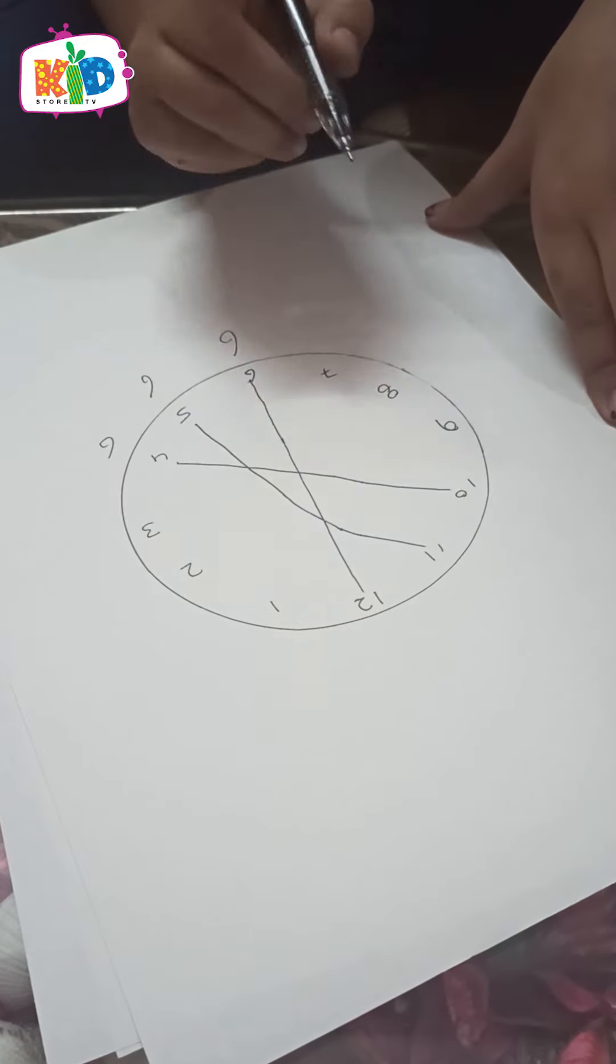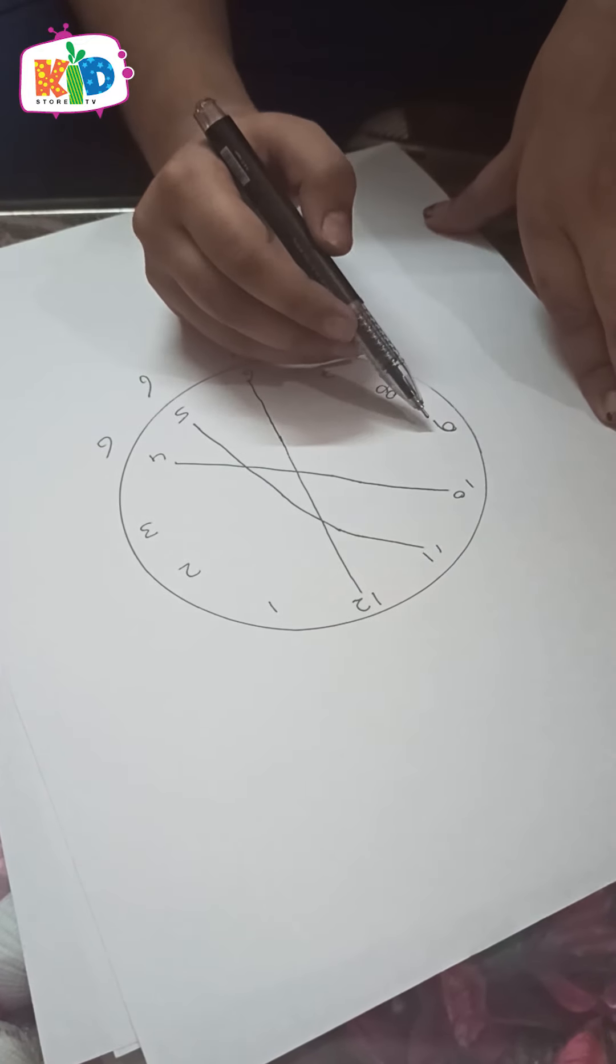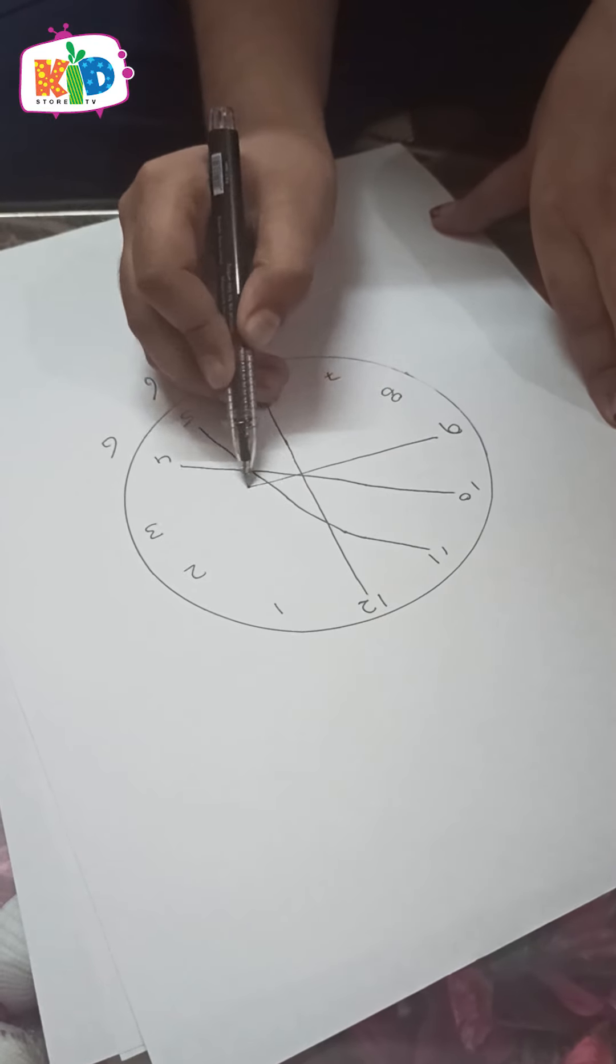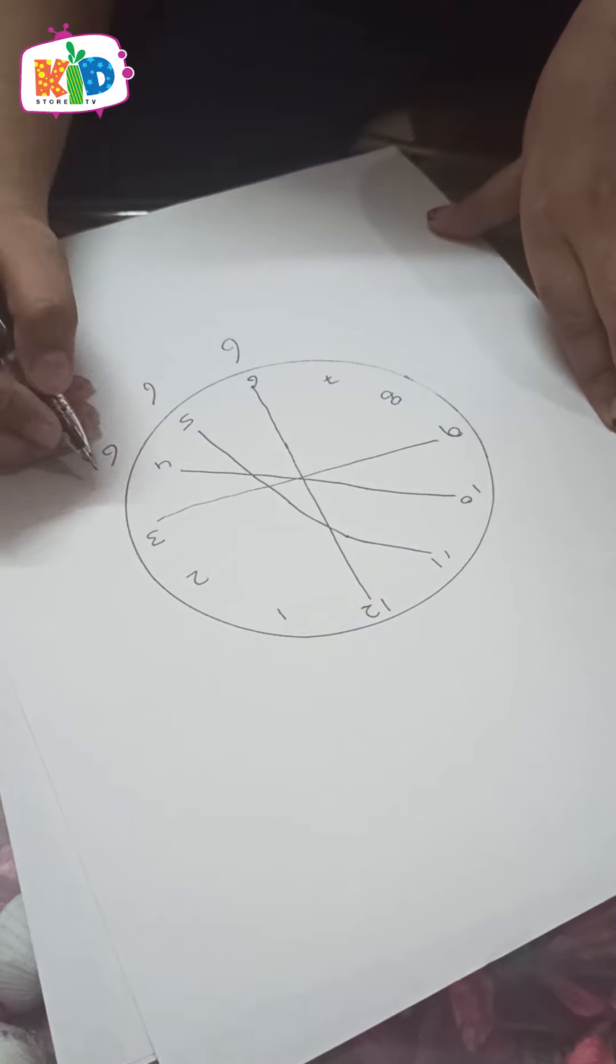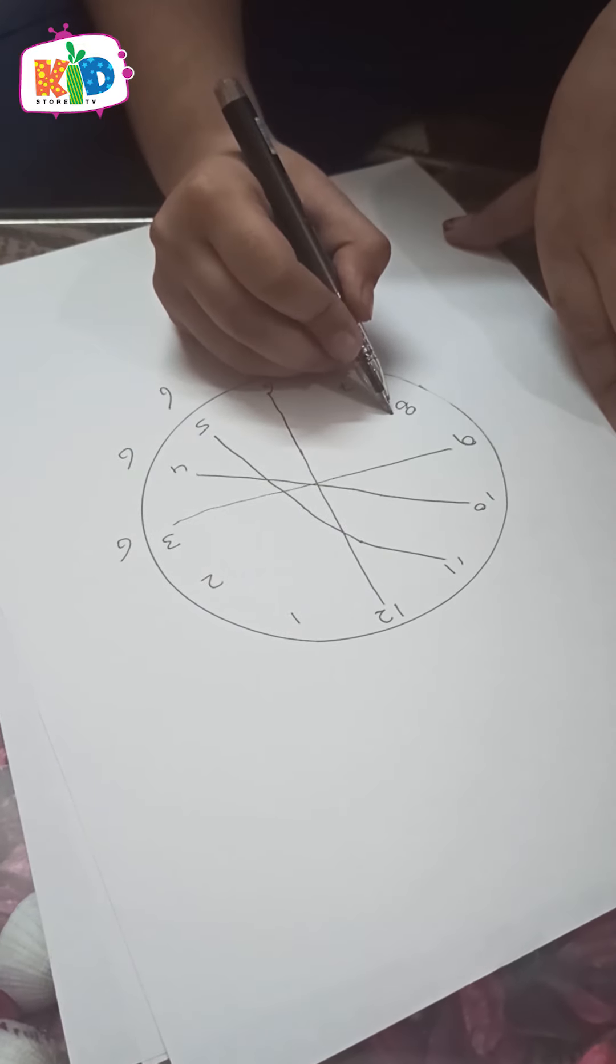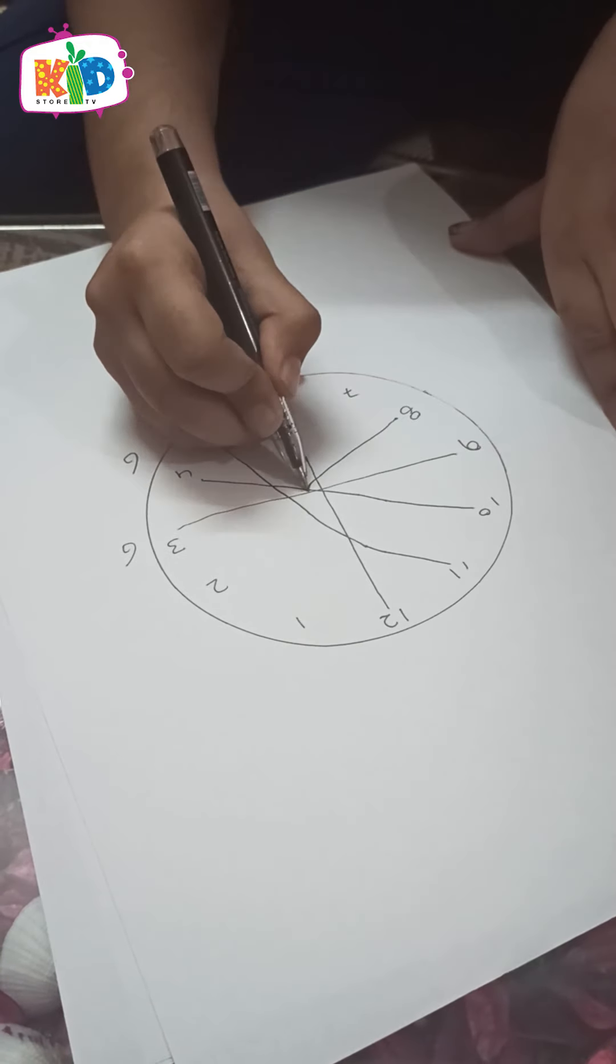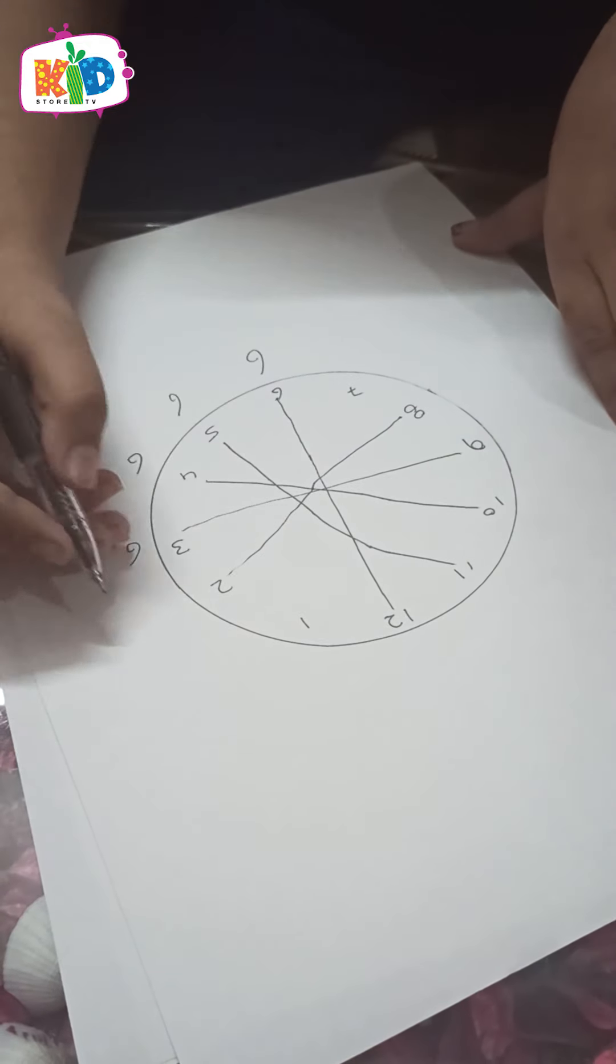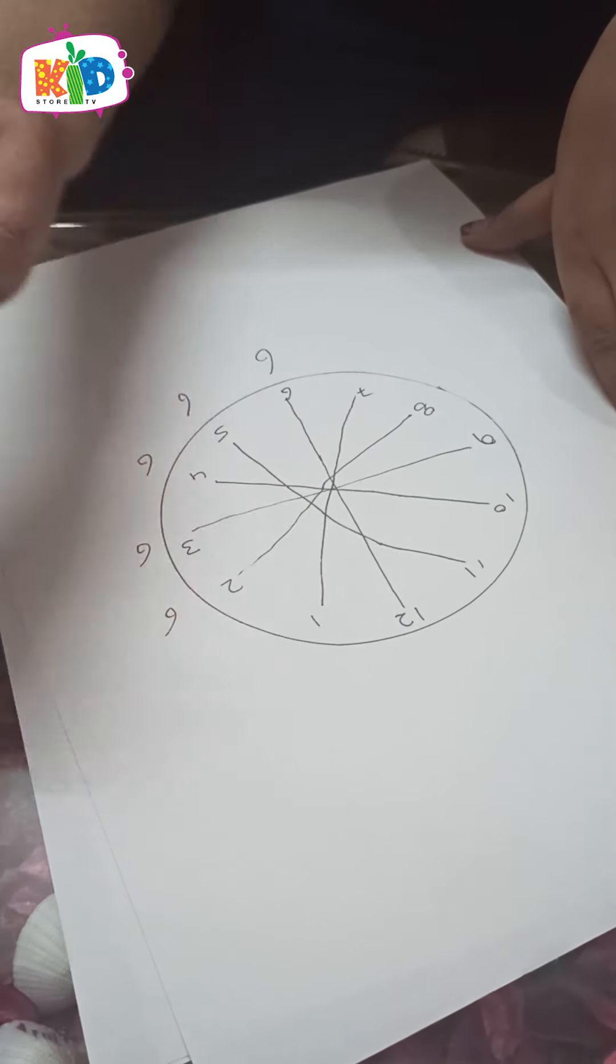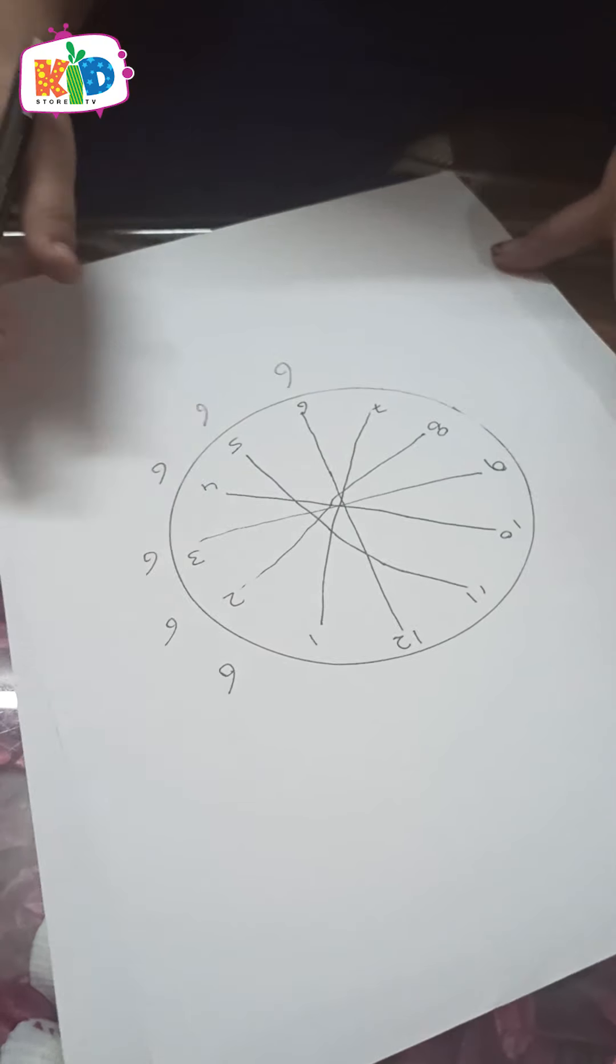If we subtract 9 minus 3, we get 6. If we subtract 8 minus 2, we get 6. If we subtract 7 minus 1, we get 6. So these are my some mathematic magical tricks. Thank you.